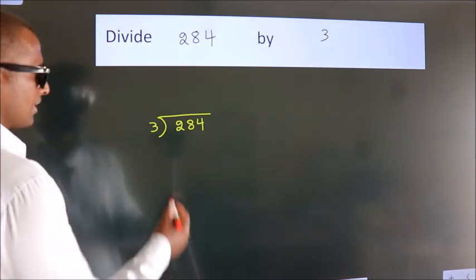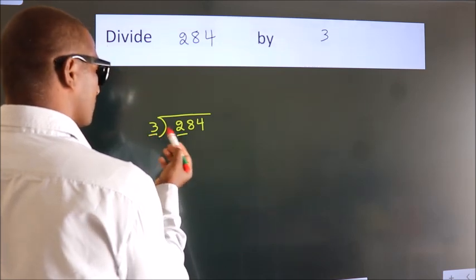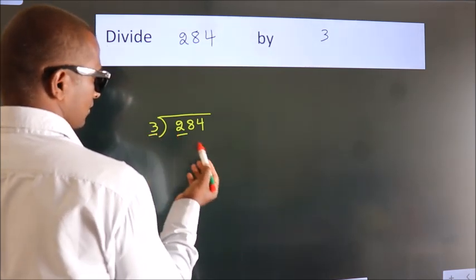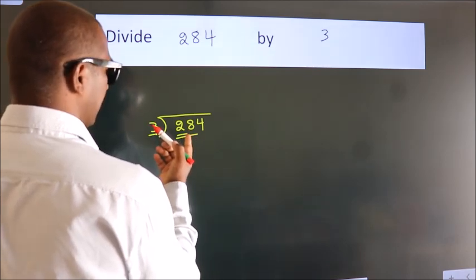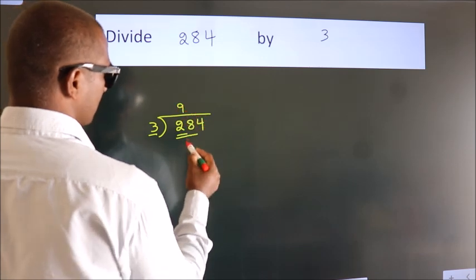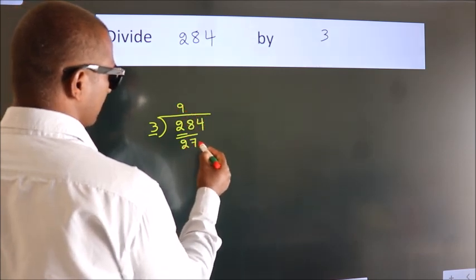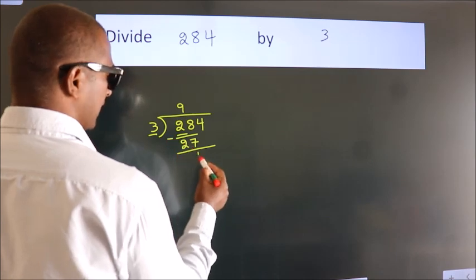Next, here we have 2, here 3. 2 is smaller than 3, so we should take 2 numbers: 28. A number close to 28 in the 3 table is 3 times 9, which is 27. Now we subtract and get 1.